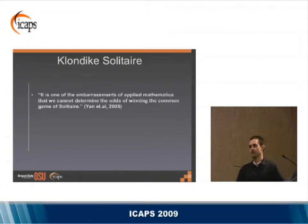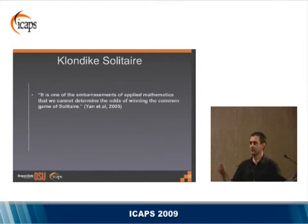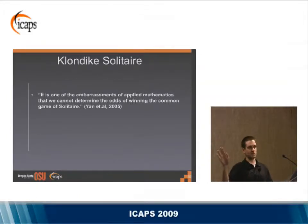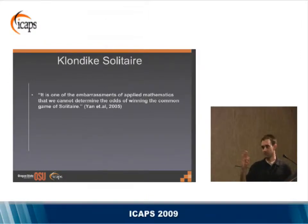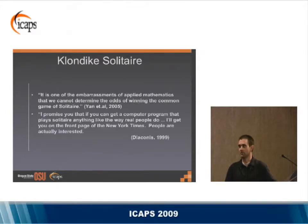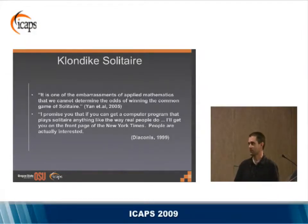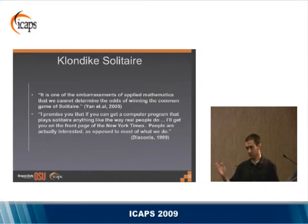Some interesting quotes from recent years on Solitaire. In a NIPS 2004 paper, Robby Yang did some work on variants of Solitaire. One co-author was a Stanford probabilist who has done a lot of work on the theory of shuffling cards. He said: 'It's one of the embarrassments of applied mathematics that we cannot determine the odds of winning the Klondike game in Solitaire.' In a 1999 talk at the University of Washington, he said: 'If you can find a computer program that plays Solitaire anything like the way real people do, I'll get you on the front page of the New York Times.'